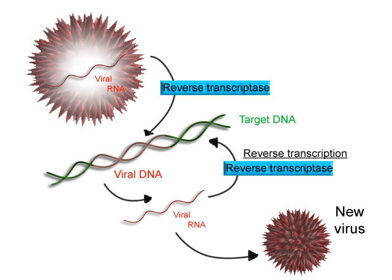Bacteria use two different strategies for transcription termination: Rho-independent termination and Rho-dependent termination. In Rho-independent transcription termination, RNA transcription stops when the newly synthesized RNA molecule forms a GC-rich hairpin loop followed by a run of uracils. When the hairpin forms, the mechanical stress breaks the weak RNA-DNA hydrogen bonds, pulling the poly-U transcript out of the active site of the RNA polymerase, terminating transcription. In the Rho-dependent type of termination, a protein factor called Rho destabilizes the interaction between the template and the mRNA, thus releasing the newly synthesized mRNA from the elongation complex. Transcription termination in eukaryotes involves cleavage of the new transcript followed by template-independent addition of adenines at its new 3' end, in a process called polyadenylation.